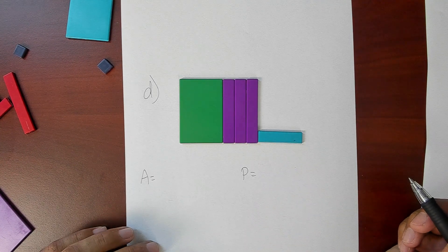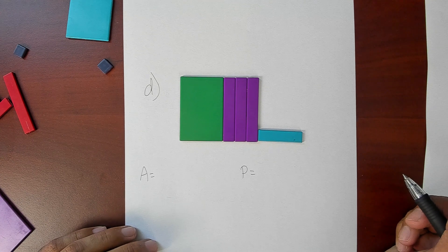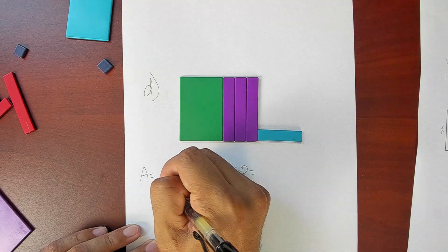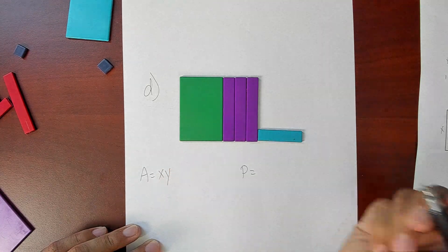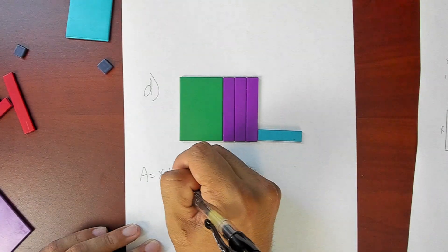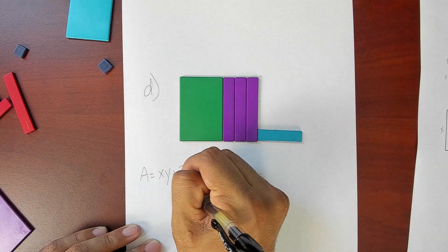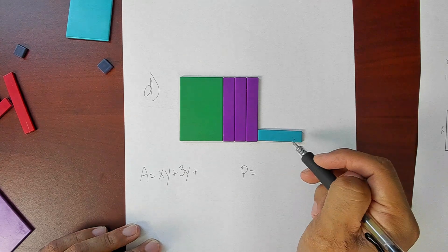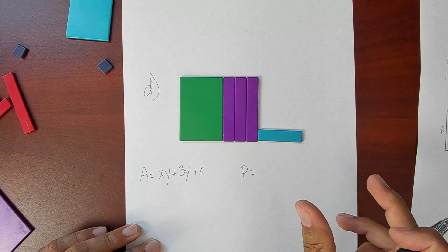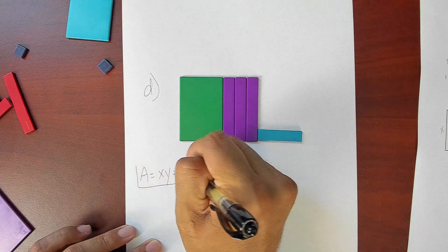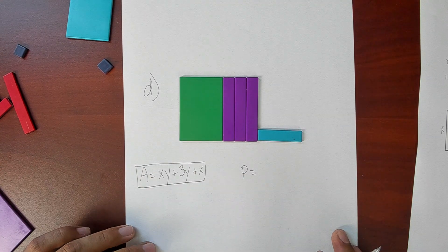We'll start with the area because that tends to be the easier one because all we have to do is add up all the tiles that we see. Well I see I have our big large green tile there that is our xy tile plus these y tiles. Looks like I have three of those y tiles plus one x tile kind of horizontally rotated. That right there is the area for our shape made up of these algebra tiles.